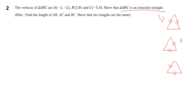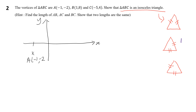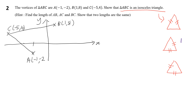Before we do this question, let's do a sketch of the diagram — you don't need to be very accurate. We have point A at (−1, −2), point B at (1, 8), and point C at (−5, 4). Joining these three points, you can see we have triangle ABC, and we need to show that it is an isosceles triangle.